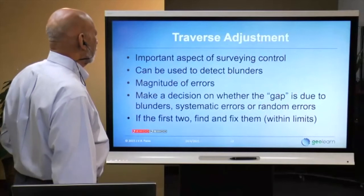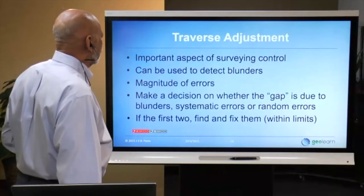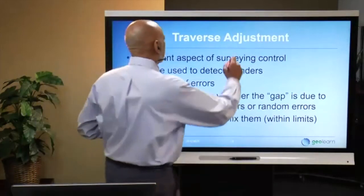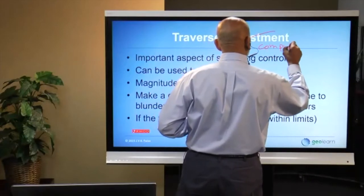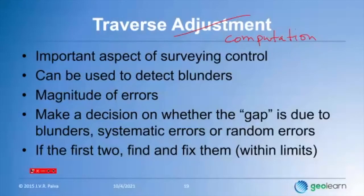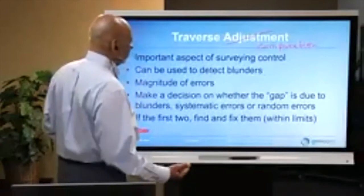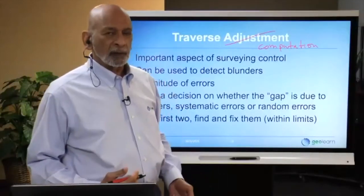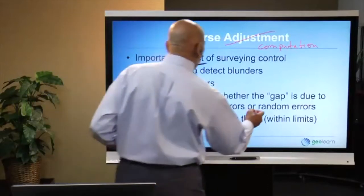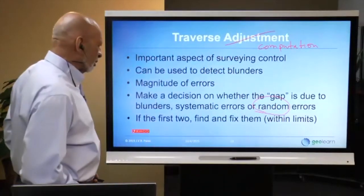Traverse adjustment is an important aspect of surveying control. Before adjusting, you can use the computation process to check for blunders or systematic errors and decide whether the gap is due to blunders and systematic errors or random errors. If the first two, try to find and fix them — because traverse adjustment can only adjust for random errors. That could be a question on any of these exams: traverse adjustment does nothing about blunders or systematic errors.